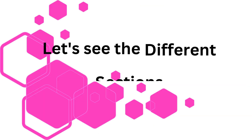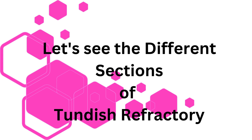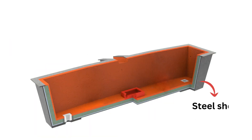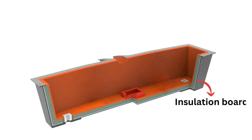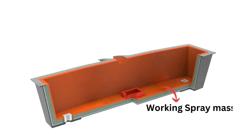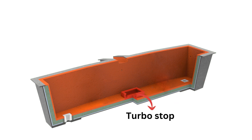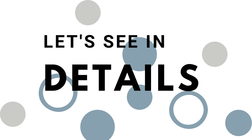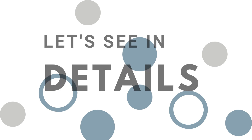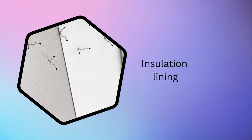Let's see the different sections of tundish refractory: tundish shell, insulation board, permanent lining, working lining (that is spray mask), and turbo stop. Let's see these in detail. First, we are going to learn about insulation lining.